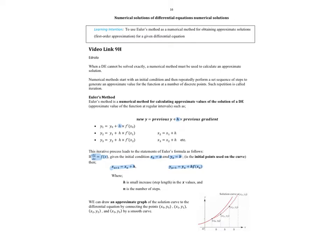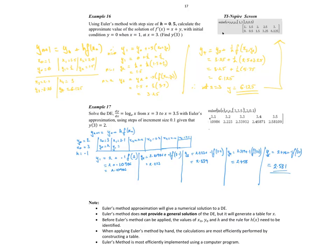Mathematically what we're saying is each y value is the previous y value plus the step size times the previous gradient. So that's what this statement here gives me. h is our small increase, n is the number of steps that we require. Let's have a look at a solution in practice.